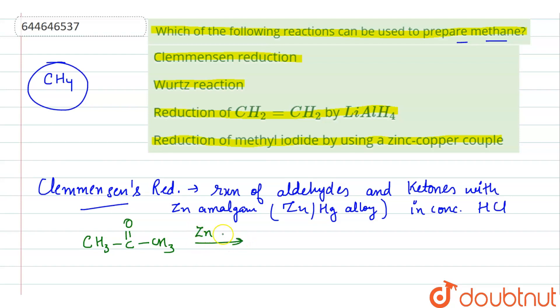If I undergo this Clemmensen reduction with ZnHg amalgam, mercury alloy in the presence of HCl, this will produce a hydrocarbon that is CH3-CH2-CH3. This contains three carbon atoms which is propane.